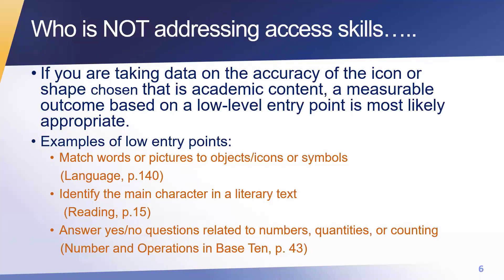Remember that little bean man and the little green step? That green step represents examples of low entry points. For example, there's one on matching words or pictures to objects or icons — whatever format they're using, that's a low level entry point on page 140. If a student can identify the main character of a literary text using whatever system they're using, that's an entry point. If they're answering yes or no questions related to numbers, quantity, or counting, that's also an entry point.